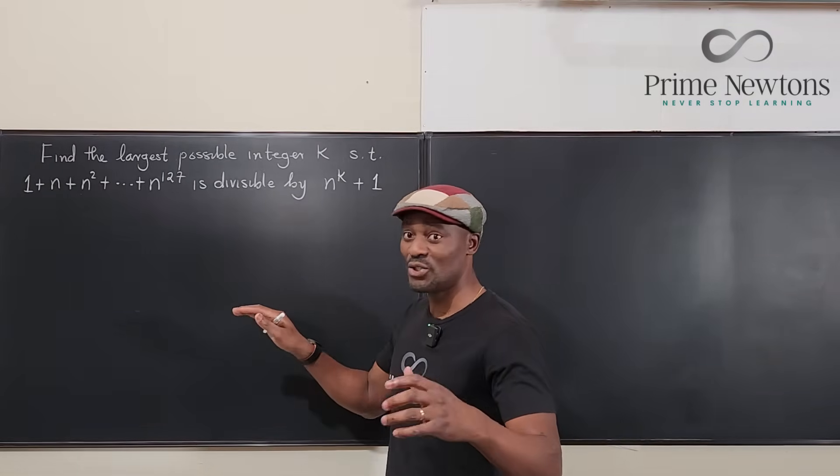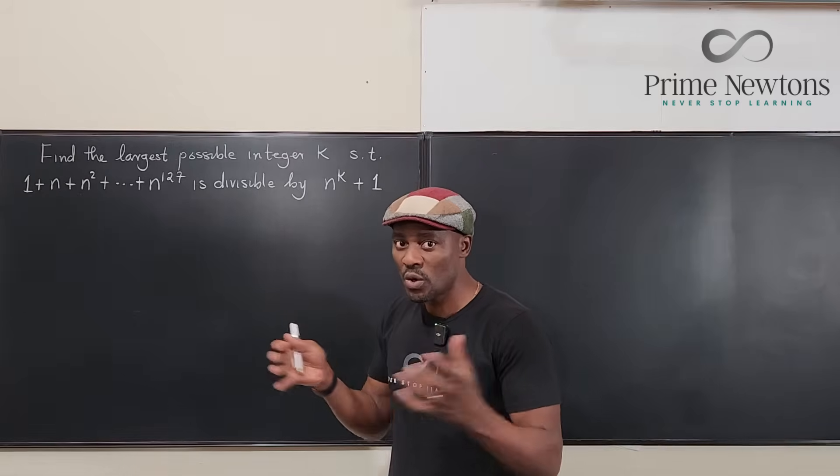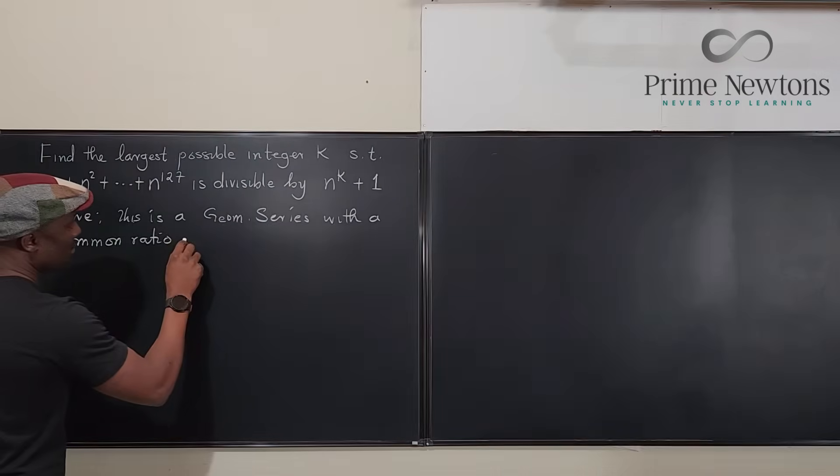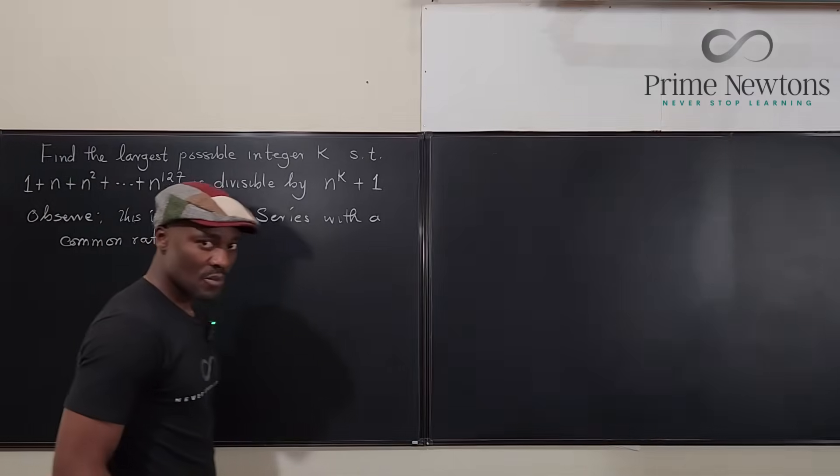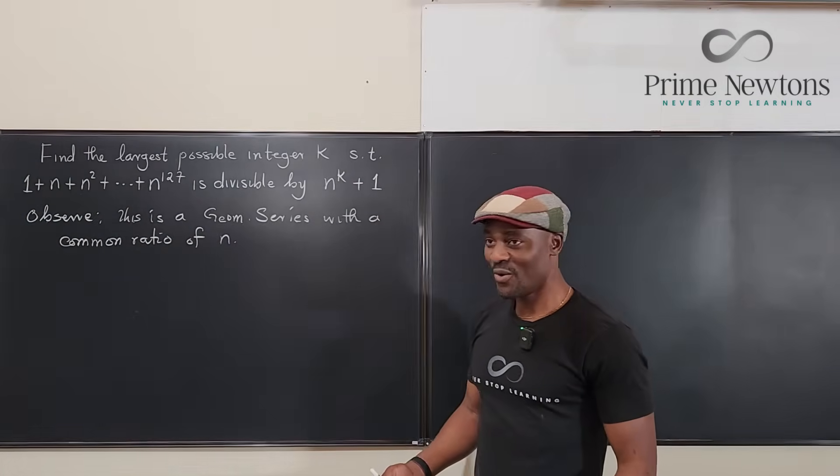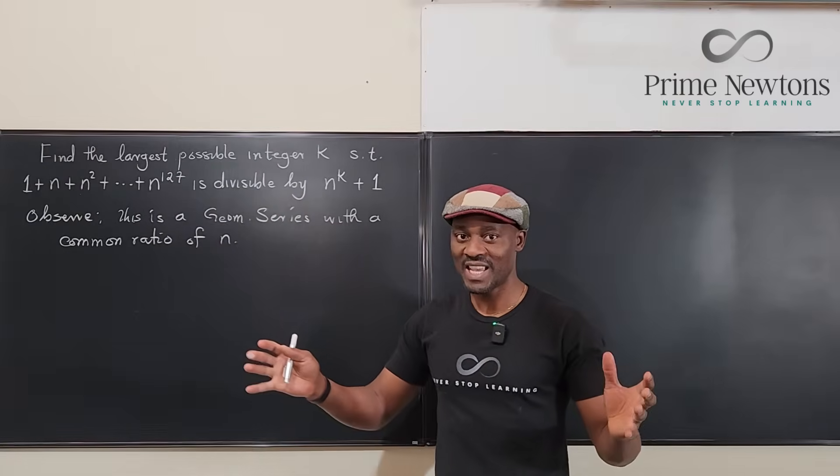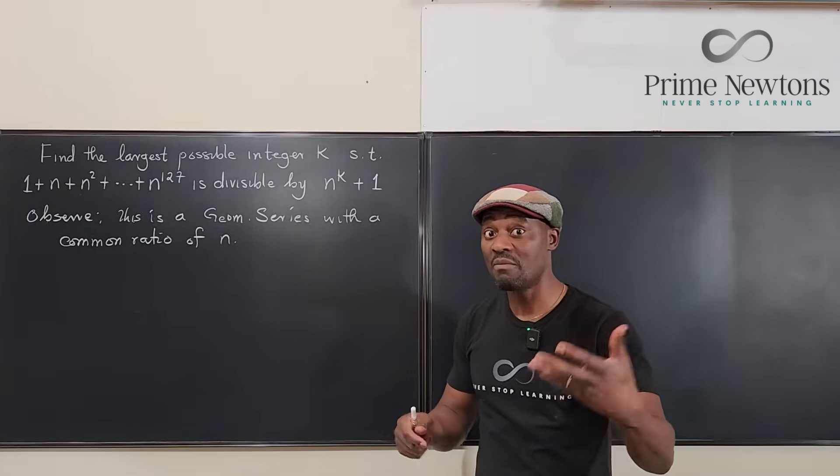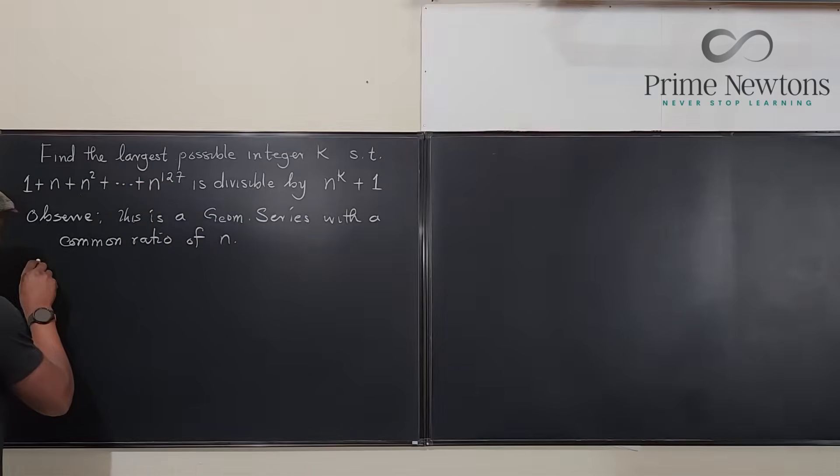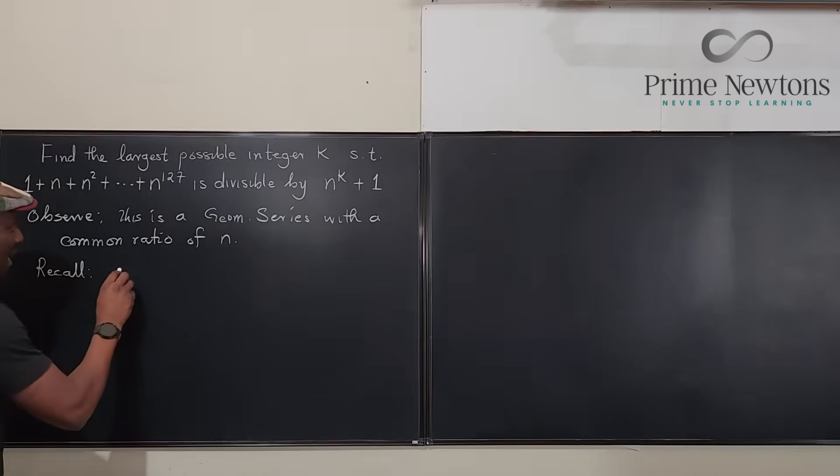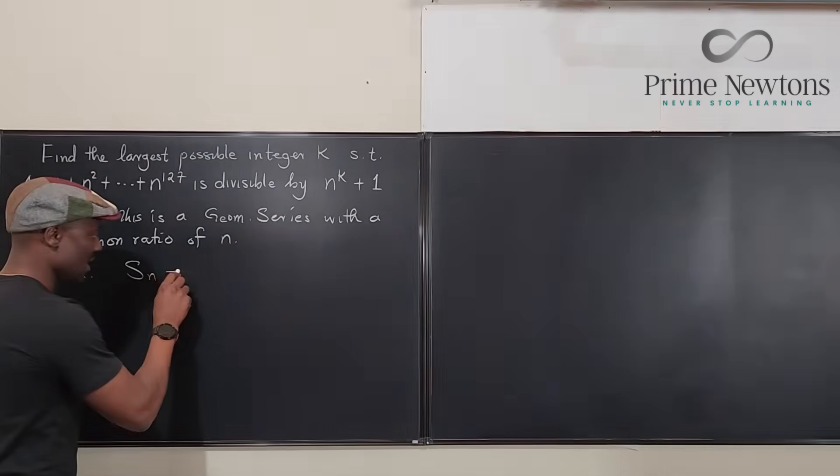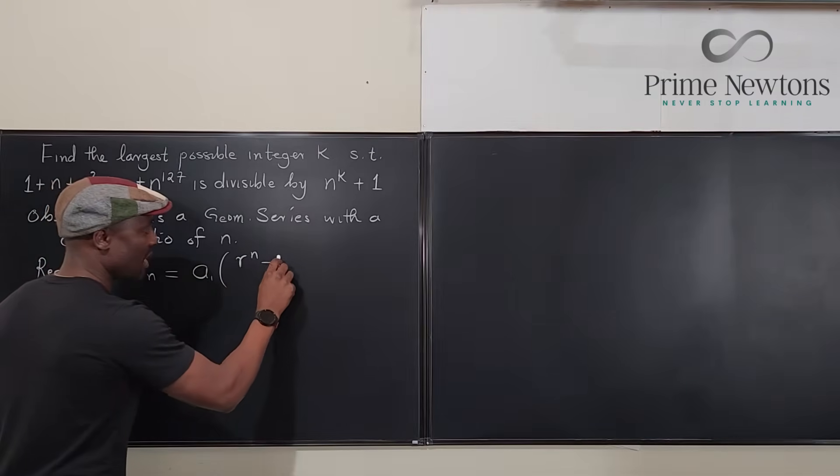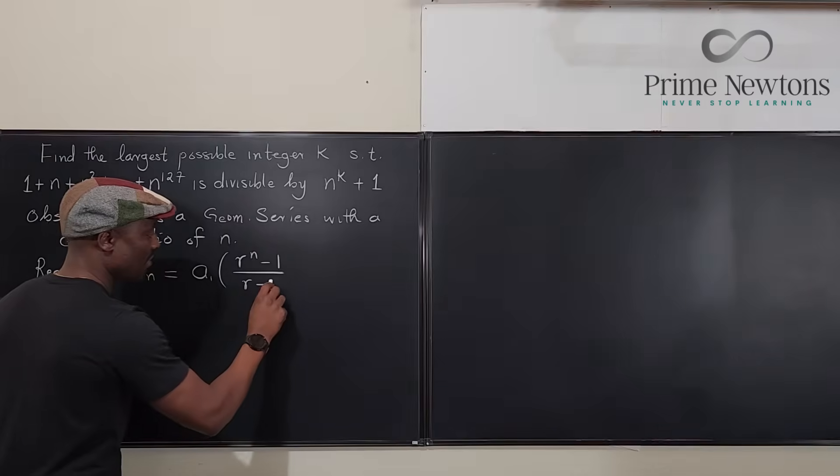And if we have a geometric series, there might be a short form of writing it, considering the fact that we're going to be doing some division. So we know that you could write this geometric series in a short form by just adding all of the terms together. Recall that the sum of any geometric series is equal to the first term multiplied by the common ratio raised to power i minus 1, divided by r minus 1.